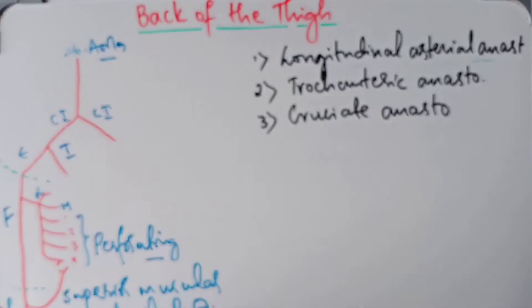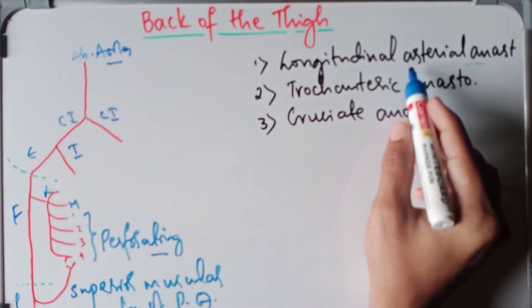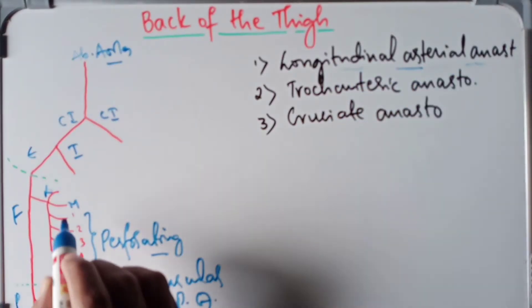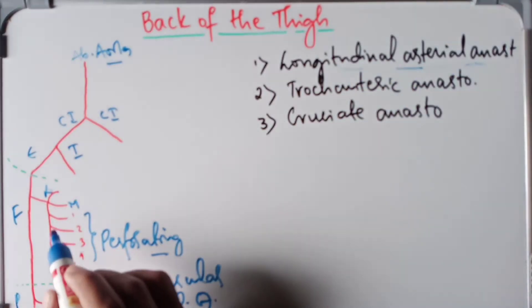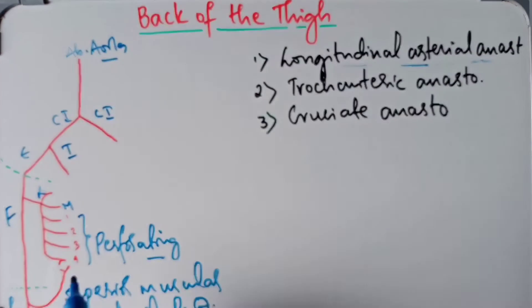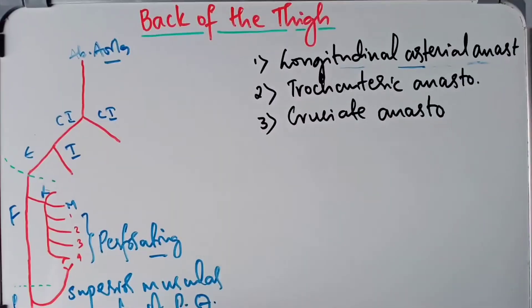The longitudinal arterial anastomosis is formed by the four perforating arteries of the profunda femoris artery.